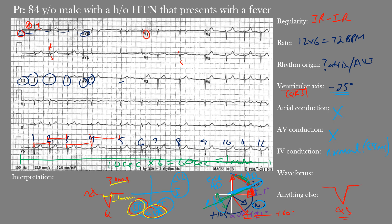Because we have pathological Q waves in leads III and AVF, there is evidence of a possible prior inferior infarction. T waves are present, asymmetric, and appear normal. The PR segment and interval cannot be assessed without visible P waves. The overall QRS interval and amplitude are within normal limits. The ST segment does not appear significantly elevated or depressed anywhere on the EKG, and the QT interval appears within normal limits.